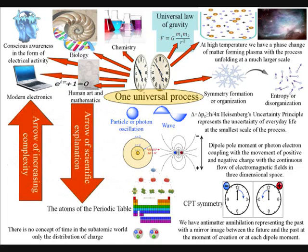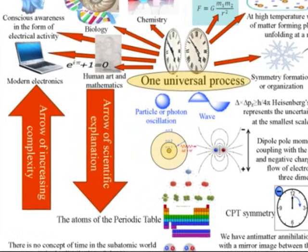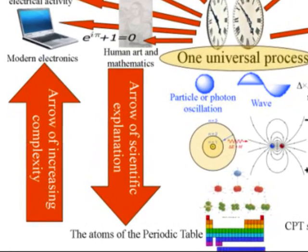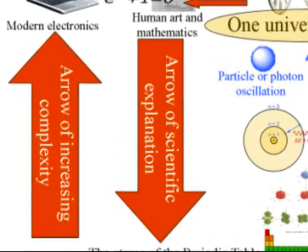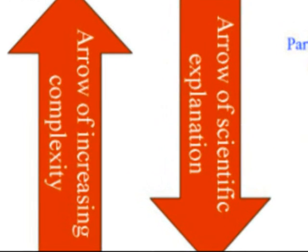This can be explained using this diagram with an arrow of scientific explanation pointing down towards the atoms of the periodic table and an arrow of increasing complexity pointing up towards the great complexity and diversity of life.